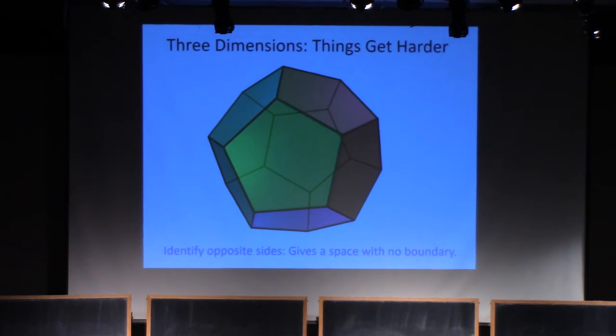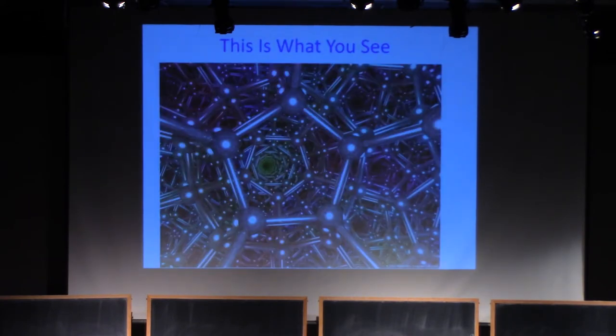If we take, for example, a dodecahedron, a 12-sided figure, and suitably identify opposite sides, we get a space that looks like that. This also figured in cross-program talks both yesterday and last week. Clearly, things are getting very hard, so it might seem like it's hopeless to go to higher dimensions and ask about topology.